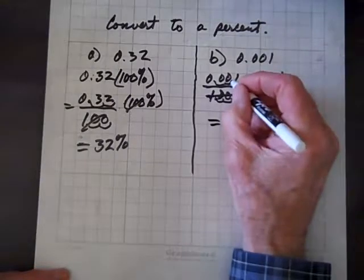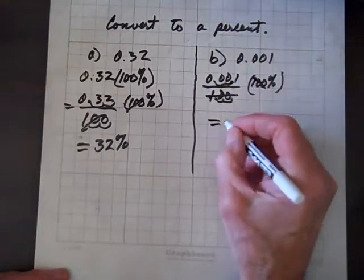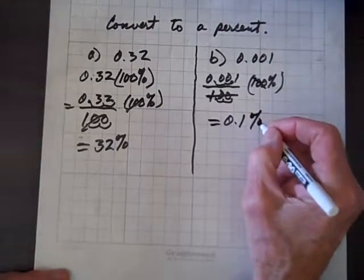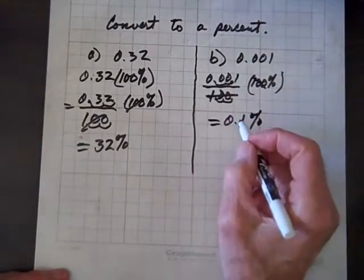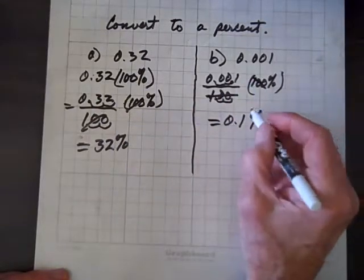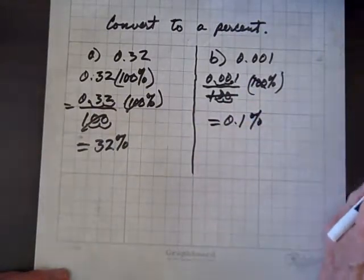And now, there we have a hundreds, so these hundreds divide out, and we're left with 0.1%. So, bottom line is, we move the decimal over to the right two places, and install the percent sign.